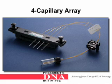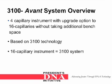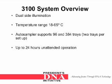This is an example of what a 4-capillary array looks like. The 3100 Avant system is a 4-capillary instrument with an upgrade option to 16 capillaries without taking additional bench space. The Avant system is based on 3100 technology. The original 3100 system was for a 16-capillary instrument. The 3100 has dual side illumination, a temperature range from 18 to 65 degrees Celsius, and the auto-sampler supports 96 and 384 trays, two trays per setup. It can be left to run up to 24 hours with unattended operation.